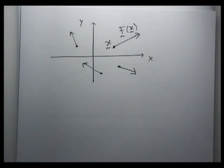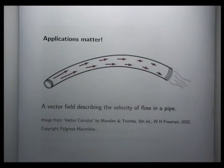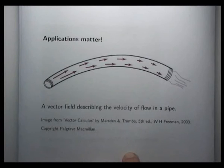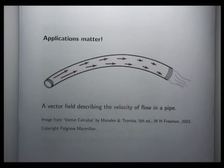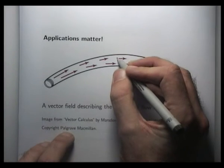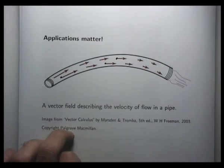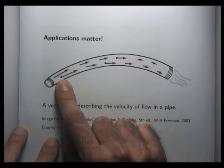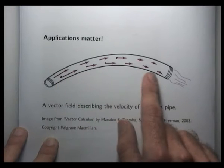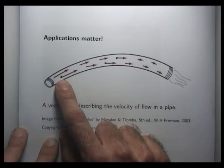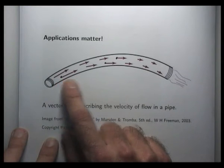I mentioned modelling. Let's consider a few very simple examples. In this particular situation, we have a velocity field of a fluid. At any point inside this pipe, we have a vector associated with that point. You can see that down this end of the pipe, the vectors have greater magnitude. So that would mean the particles at this end of the pipe have higher speed than the ones at the other end.